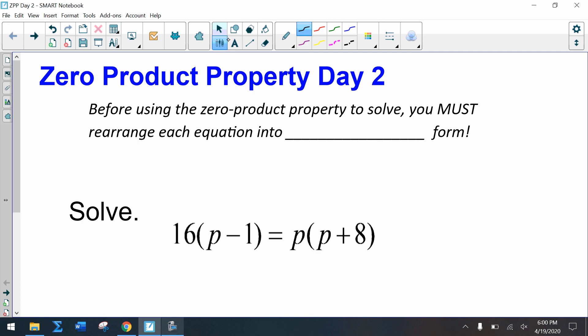Now that we finished the first day of zero product property, we're going to be practicing a few more examples that may be a bit more challenging. But just a reminder, before we use the zero product property to solve, you must rearrange each equation into standard form. So standard form ax² + bx + c, and we have to have all of that equal to zero. So for every single problem that we're looking at today, ask yourself, is this in standard form?